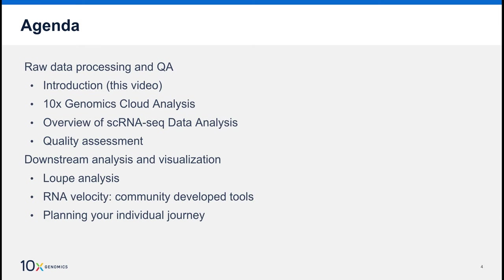Now for the agenda. The first four videos in this series are focused on raw data processing and quality assessment. Here we'll run our CellRanger pipeline on the 10x Genomics cloud analysis platform and use the web summary output from the pipeline to assess the quality of our run. The last three videos focus on downstream analysis and visualization. We'll cover some of the wonderful, powerful features of our Loupe Browser, followed by a foray into a community developed tool to showcase some of the great things the 10x data analysis community is doing with our products. And finally, we'll wrap up with some guidance on planning your individual analysis journey.